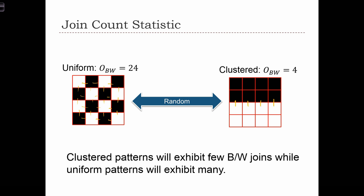In random cases we are going to have some observed number of black-white joins in the middle of this range — in this case, between 4 and 24. You can see how we might structure a statistical test by looking at the observed number of black-white joins and comparing it to what the black-white join count would be if the data were random.